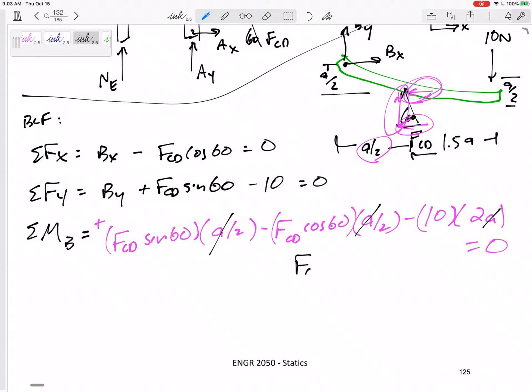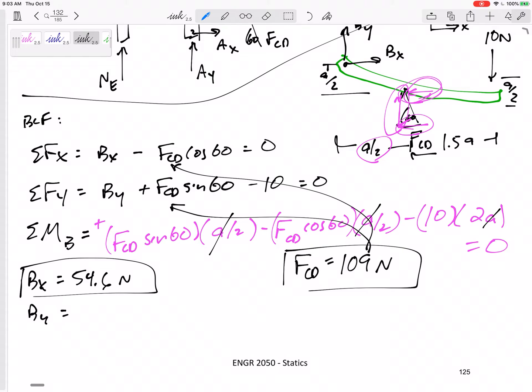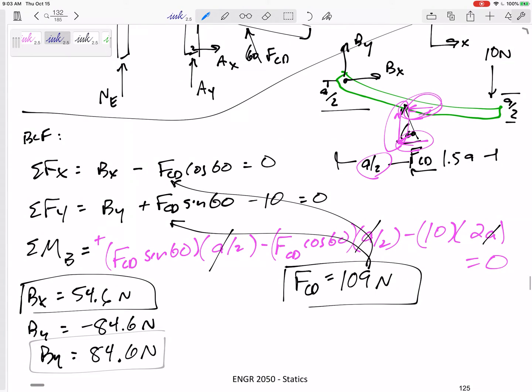So here I've got FCD is equal to 109. It came out positive, so that means I guessed correctly. Go back and plug in 109 right here, and I would get BX is 54.6 positive, and I would get BY of negative 48.6. What does that mean? That means BY is 84.6, and it is not pointed up, it is pointed down on the handle, on this figure. So I went to the handle because there were three unknowns, and I knew I had three equations, so I could solve for it.